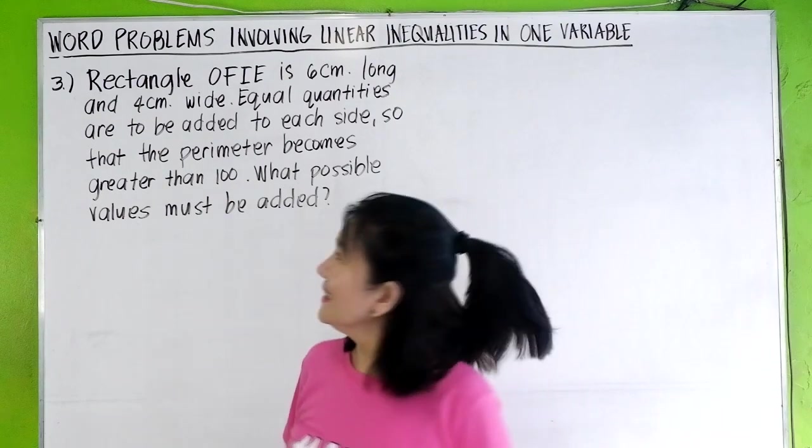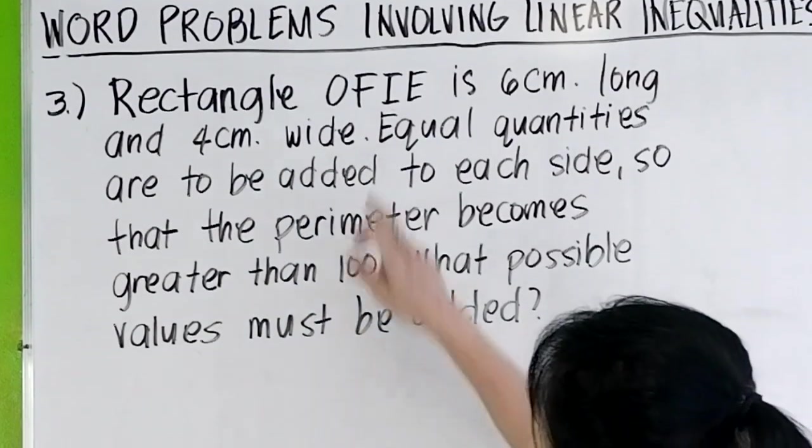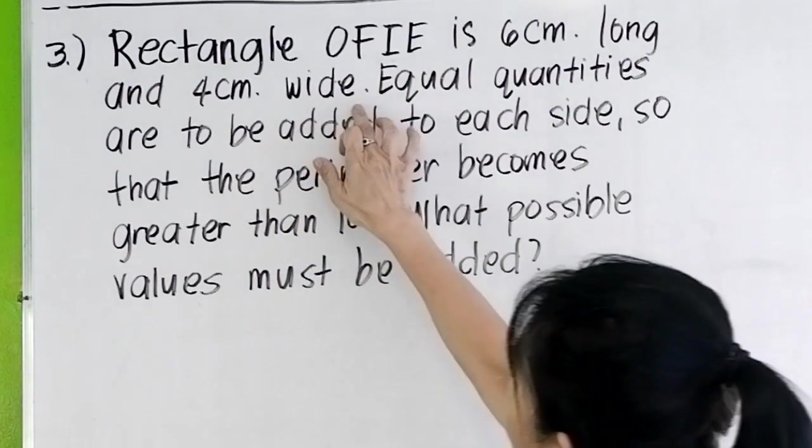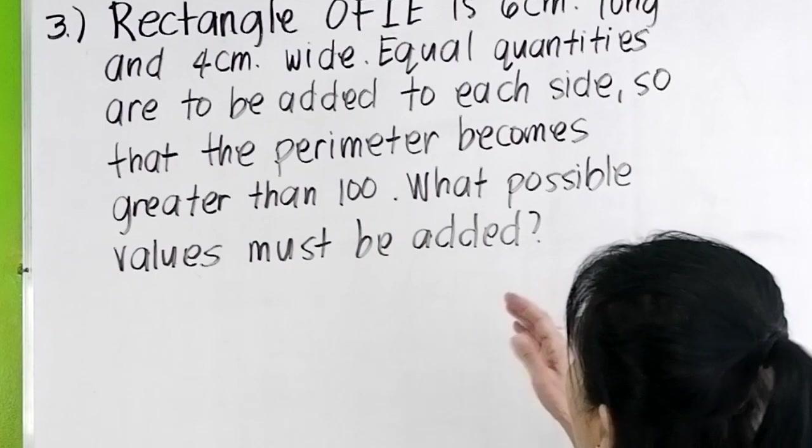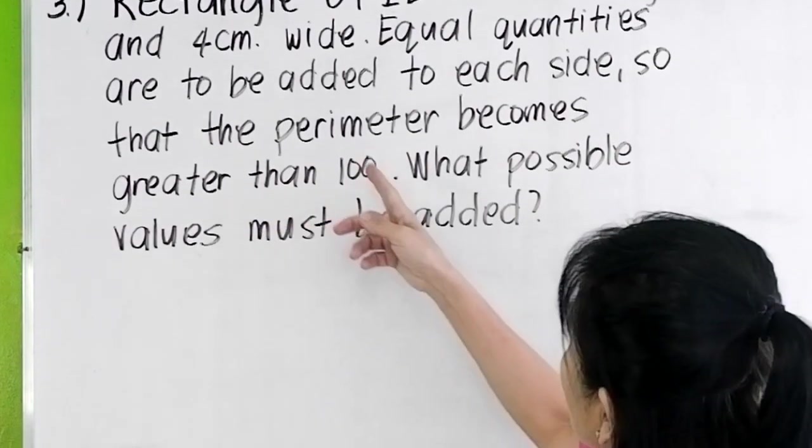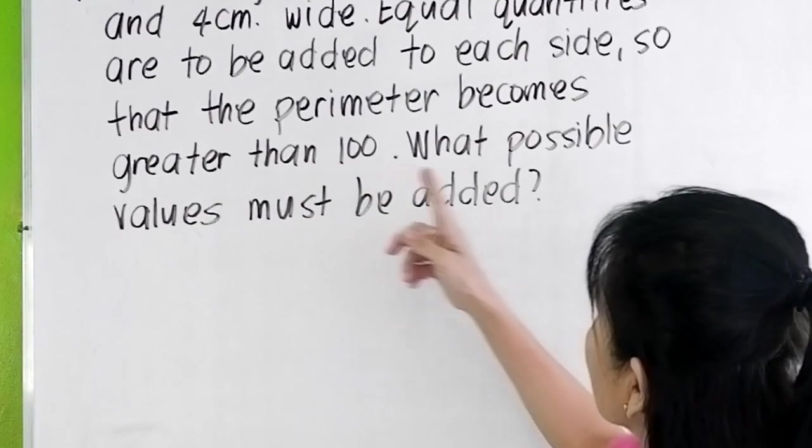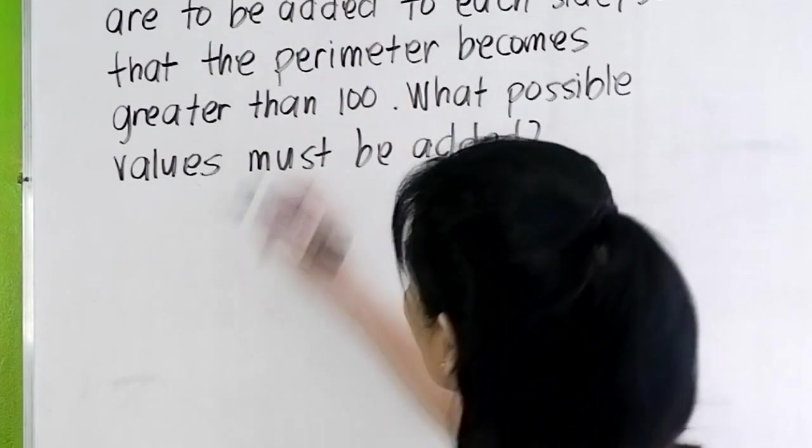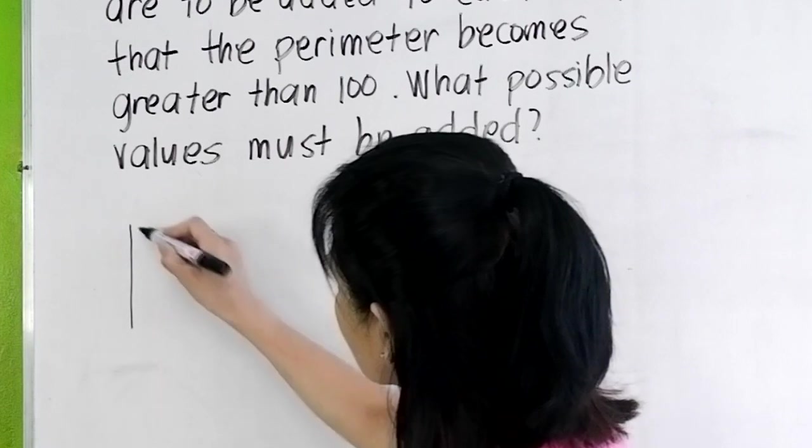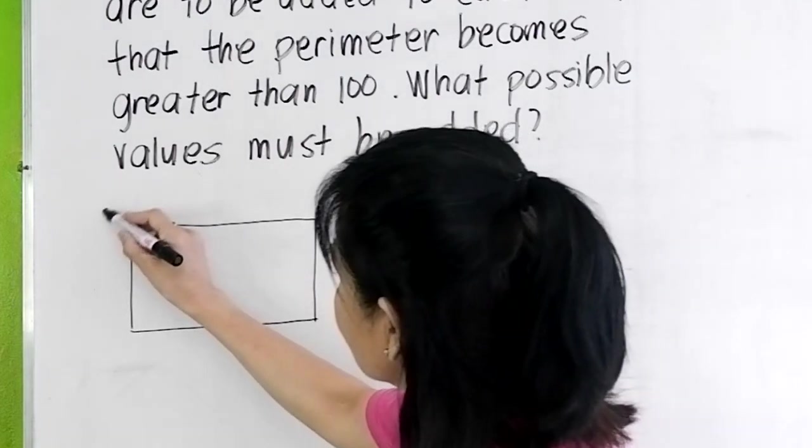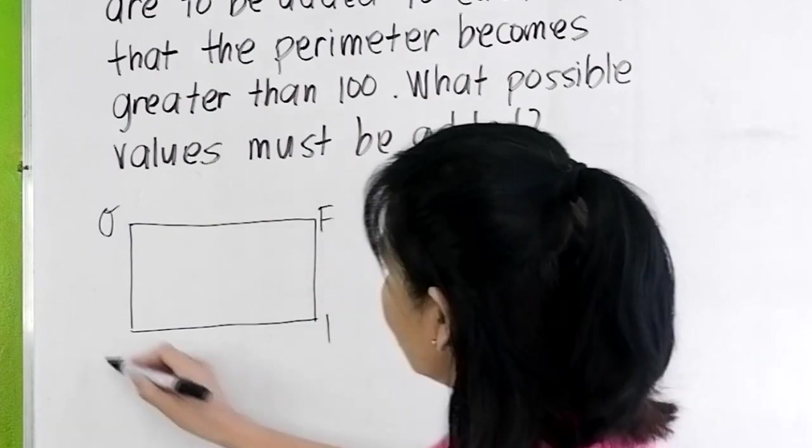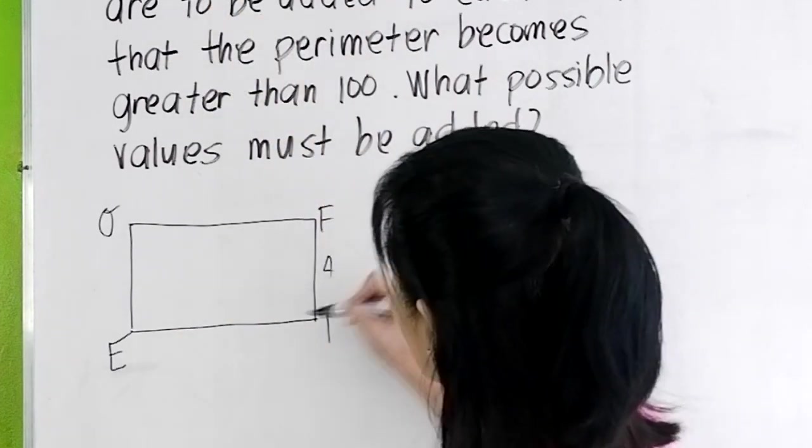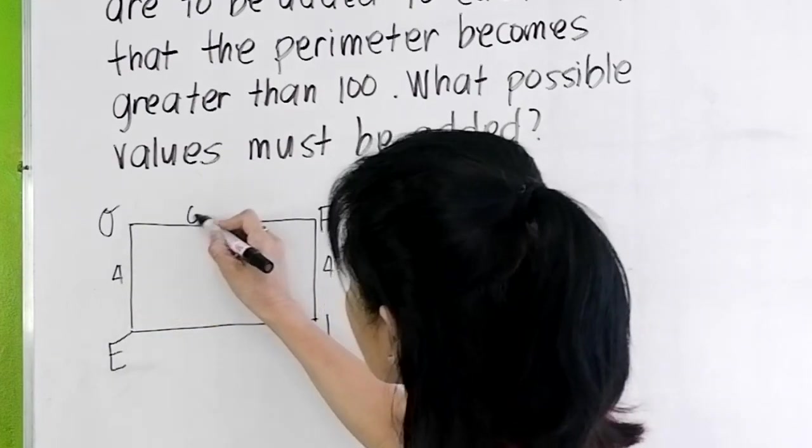Let's move on to problem number 3. Rectangle OFIP is 6 cm long and 4 cm wide. Equal quantities are to be added to each side so that the perimeter becomes greater than 100. What possible values must be added? I'll draw rectangle OFIP first. Let's say this is rectangle OFIP. It's 6 cm long and 4 cm wide. Let's say this is 4, 4, 6, 6.